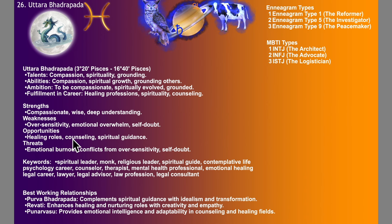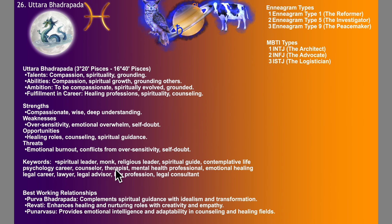Opportunities could be in healing roles, counselling and spiritual guidance — something that this world needs a lot of. Threats could be emotional burnout, conflicts from oversensitivity and self-doubt. Keywords in career for Uttarabhadrapada people should be spiritual leader, monk, religious leader, spiritual guide and a contemplative life. This is as Pisces as you can get. They could also do well in psychology careers as a counsellor, psychologist, therapist, mental health professional, emotional healing fields — like the Emotion Code by Dr. Bradley Nelson, a wonderful system.